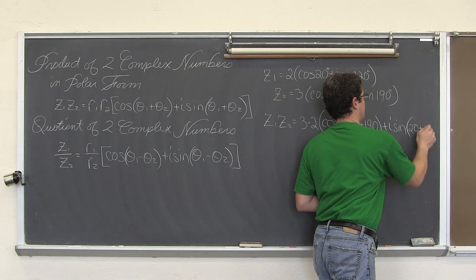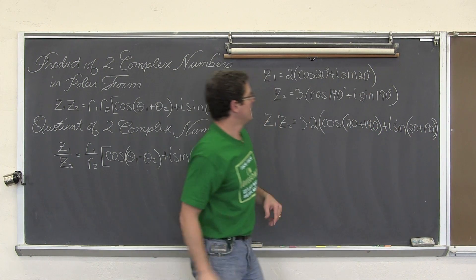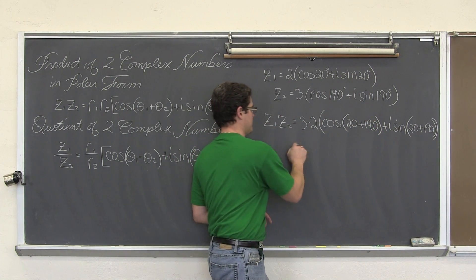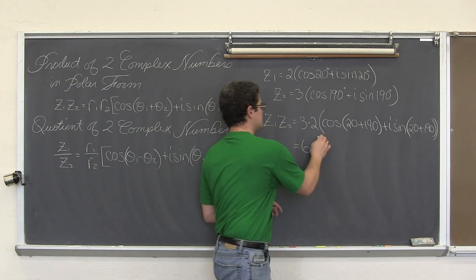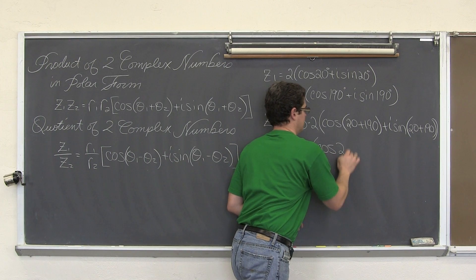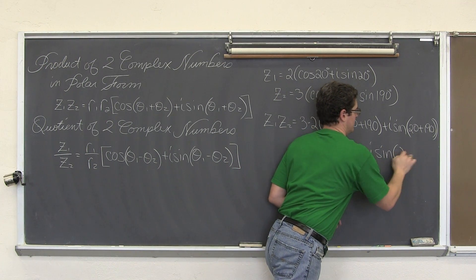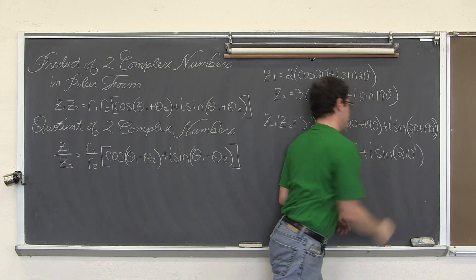I'm running out of room here. 20 plus 190 is 210, so we get 6 times the quantity cosine 210° plus i times sine 210°.